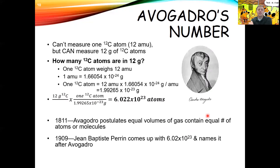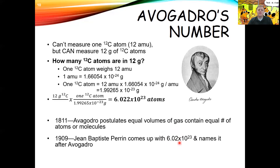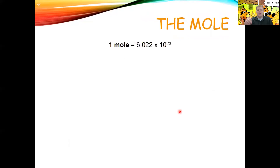Avogadro didn't actually figure this out himself. In 1811, André Avogadro postulated that equal numbers of atoms or molecules are present in equal volumes of gas, regardless of which gas. Nearly a century later, Jean-Baptiste Perrin came up with the number 6.02 × 10²³ and named it after Avogadro. Subsequent scientists got a few more decimal places. For this class, we'll use 6.022 × 10²³.